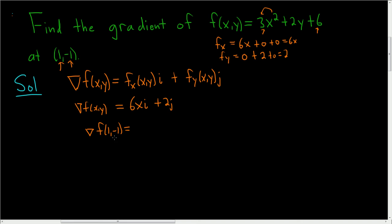So x is 1. Here we get 6 times 1 times i, and then plus 2j. So the final answer is 6i plus 2j.